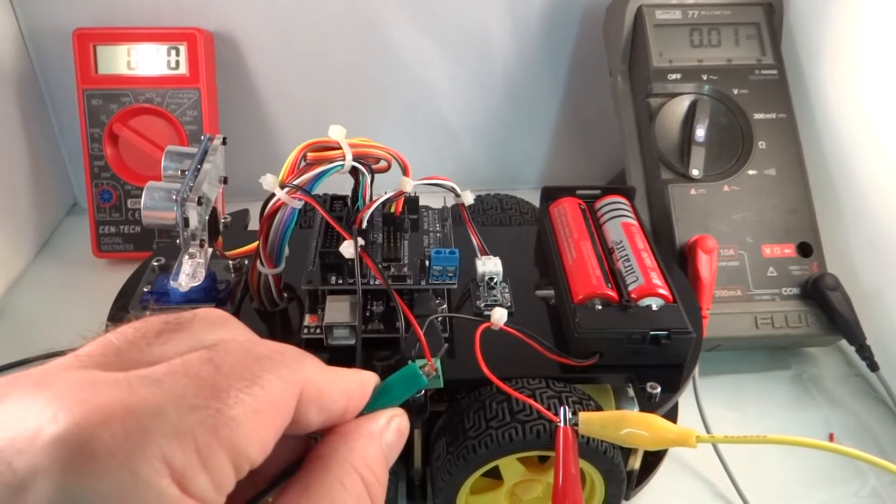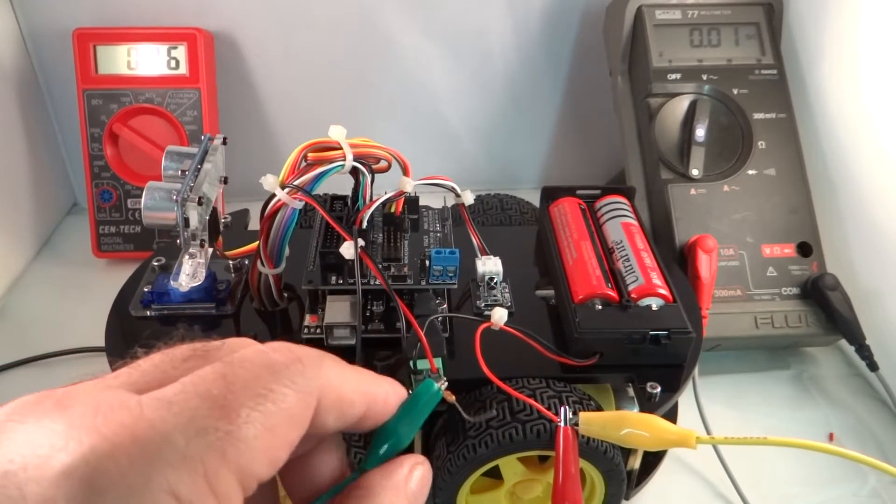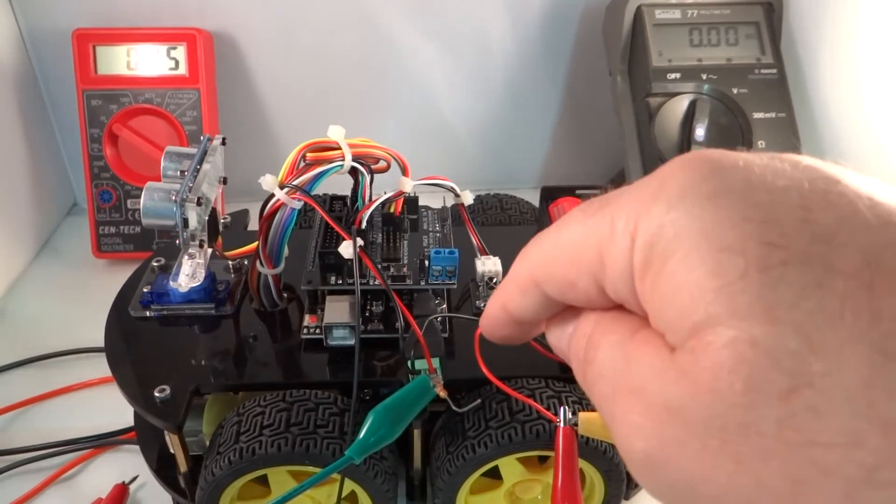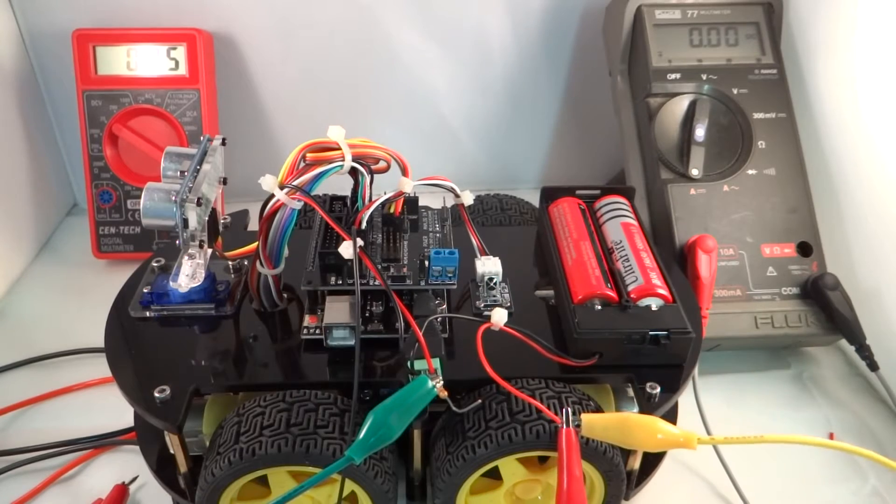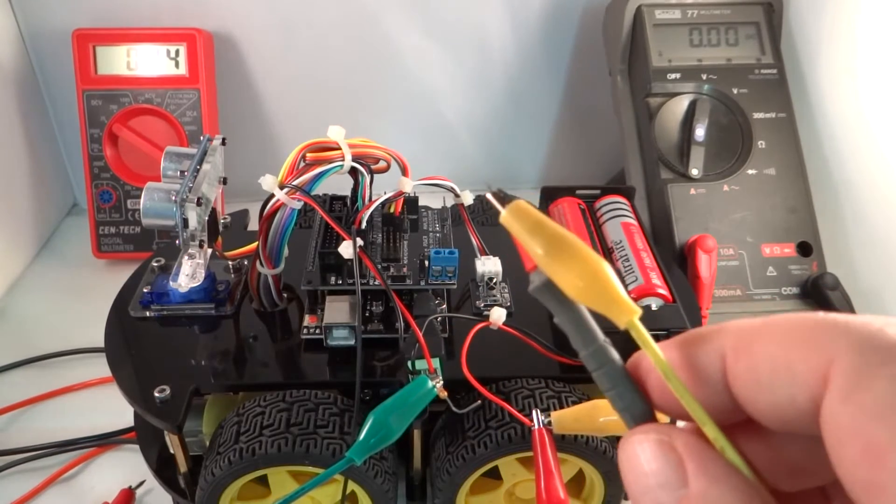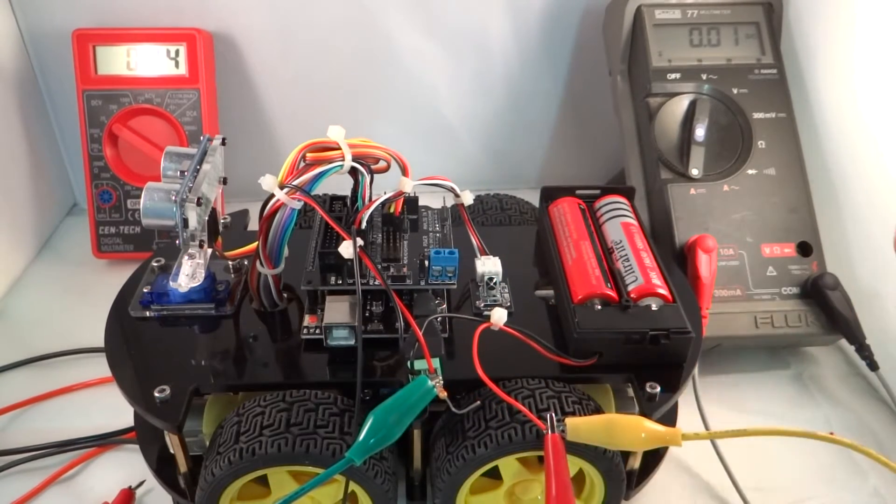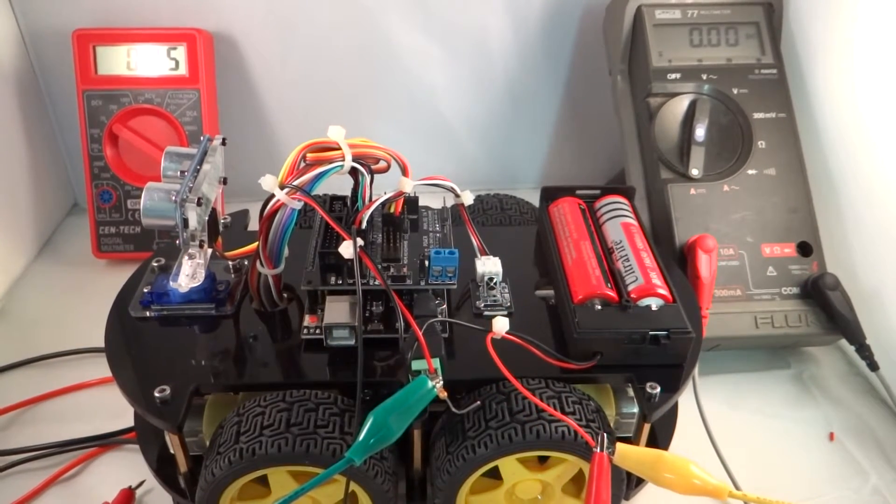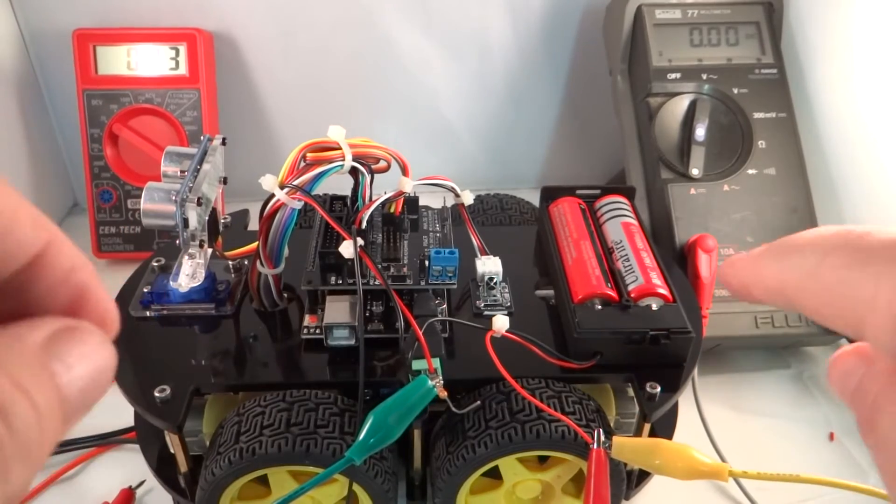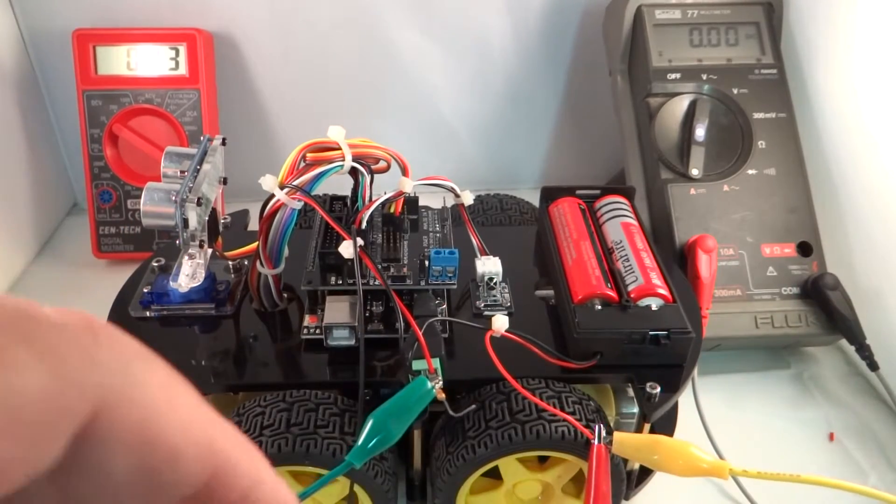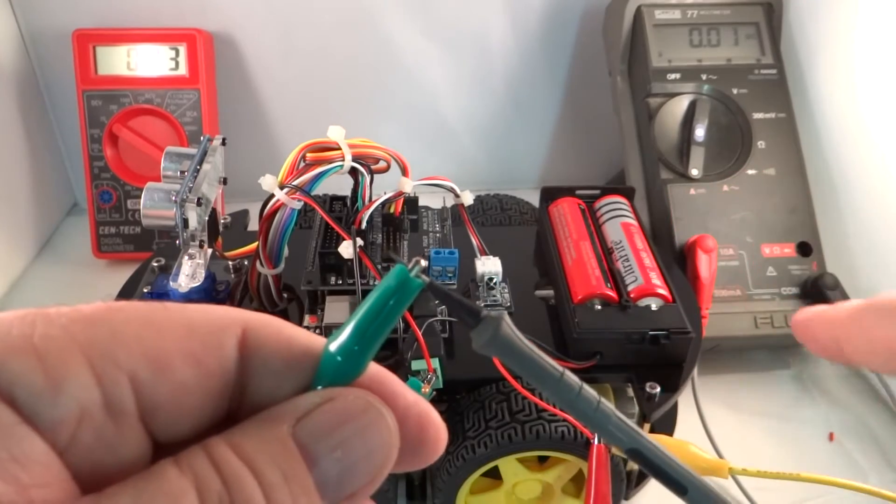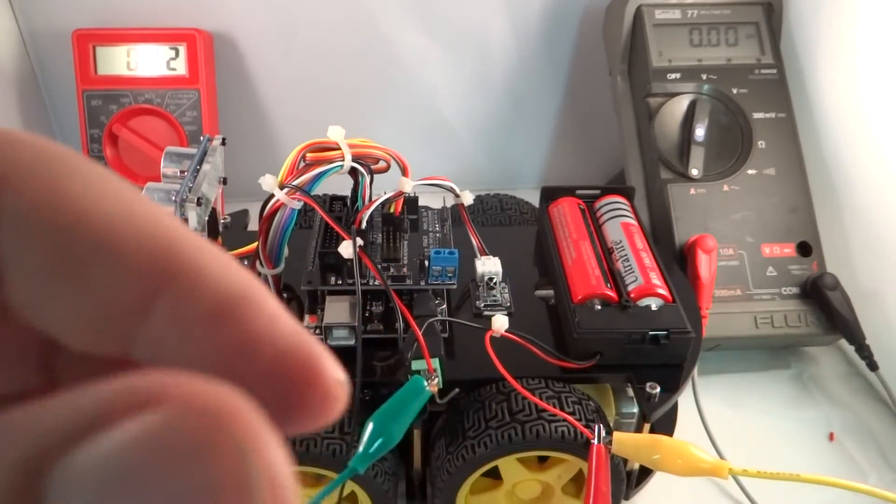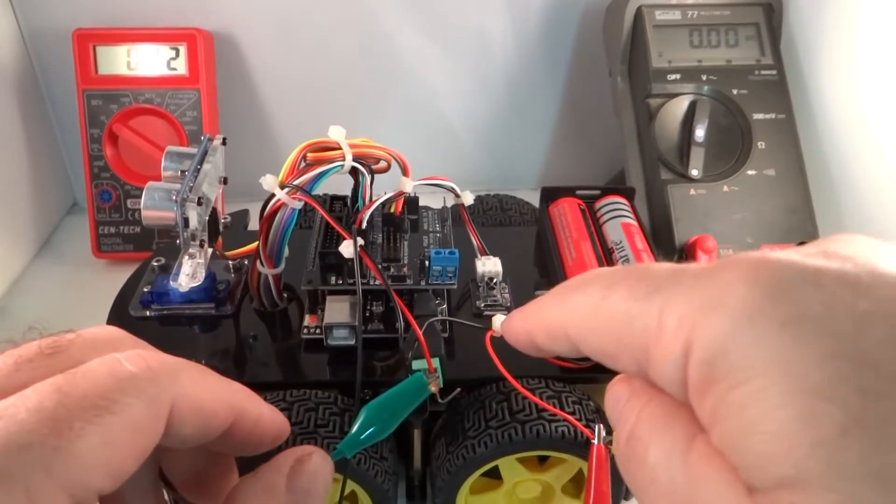For the other side we'll hook it to a green clip lead. So now you can see the power from the batteries is going to come through this red wire to the yellow wire to the voltmeter lead, go through the voltmeter to this green lead and into the car.